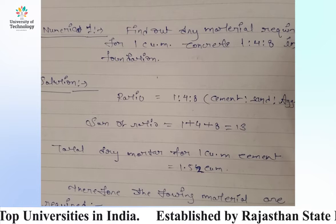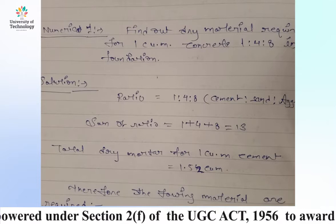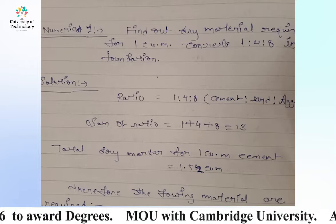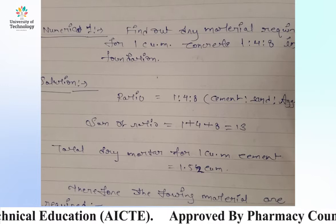First, find out dry material required for one cubic meter cement concrete ratio 1:4:8 in foundation. What we are talking about is 1:4:8 concrete which is used in foundation, and you have to find dry material for this — how much cement and how much sand you have to find.